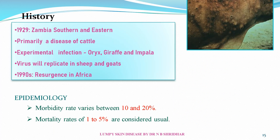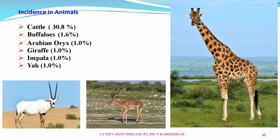In 1929, the disease started in Zambia, Southern and Eastern Africa, and later spread all over India, affecting cattle. Apart from cattle, Arabian Oryx, Xerope, and Impala have also been seen to be affected. The incidence in cattle is 30.8 percent, buffaloes 1.6 percent, Arabian Oryx 1 percent, Xerope 1 percent, Impala 1 percent, and Yak 1 percent.